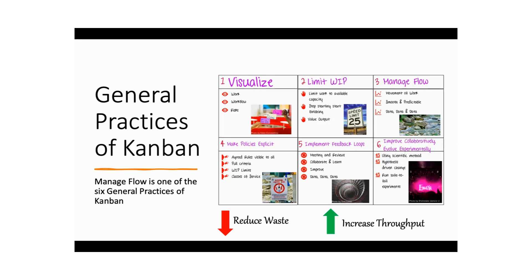When you prioritize those improvement areas, you prioritize them collaboratively within your team. These are the six general practices of Kanban in a bird's eye view. When you implement all six general practices, they help you increase throughput and reduce waste, and once you reduce waste, you optimize your flow.